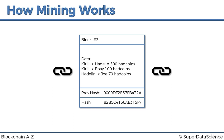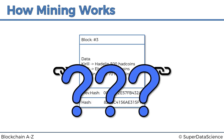This immediately raises a question: if it's so simple to just take the block number, the data, and the previous hash, put them into a hashing algorithm and get a hash out in half a second — then what's the whole fuss about mining? Why are there hundreds of thousands of mining rigs around the world with so much computational power dedicated to them? What's this competition that everybody's in?